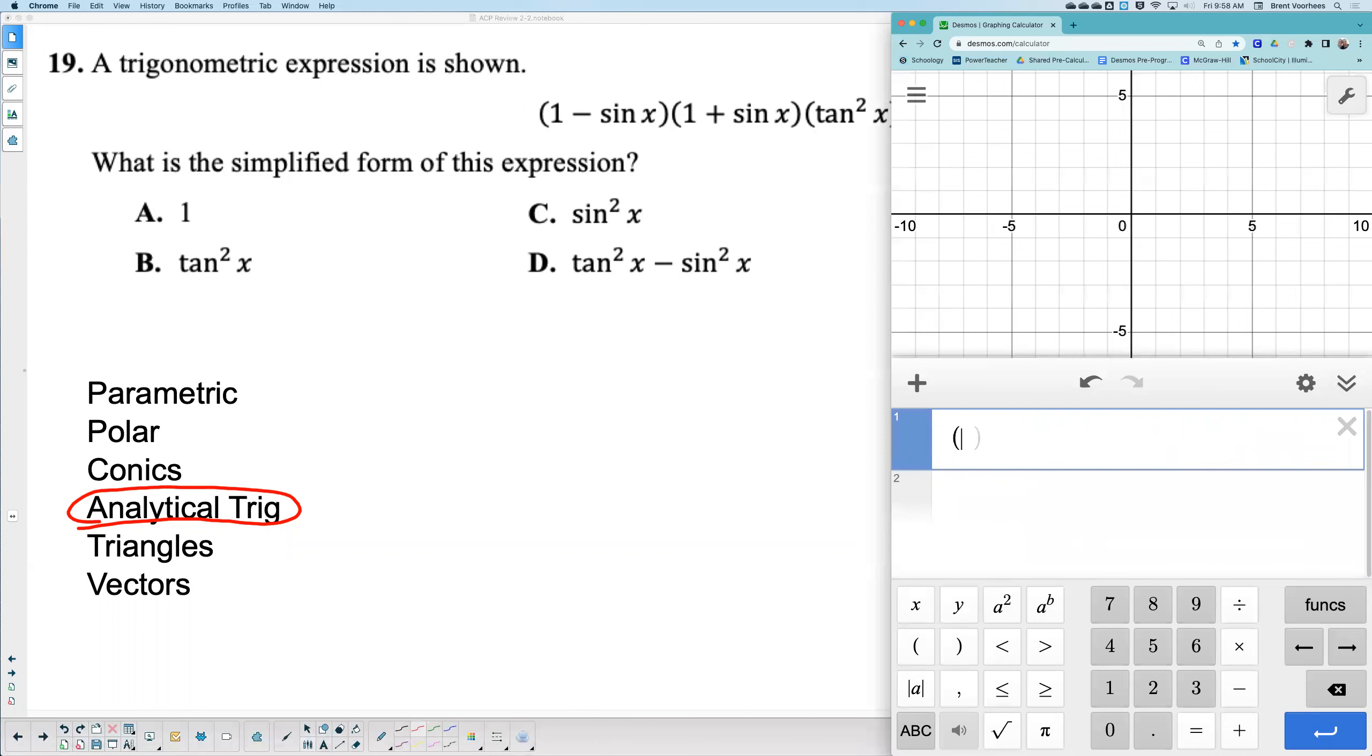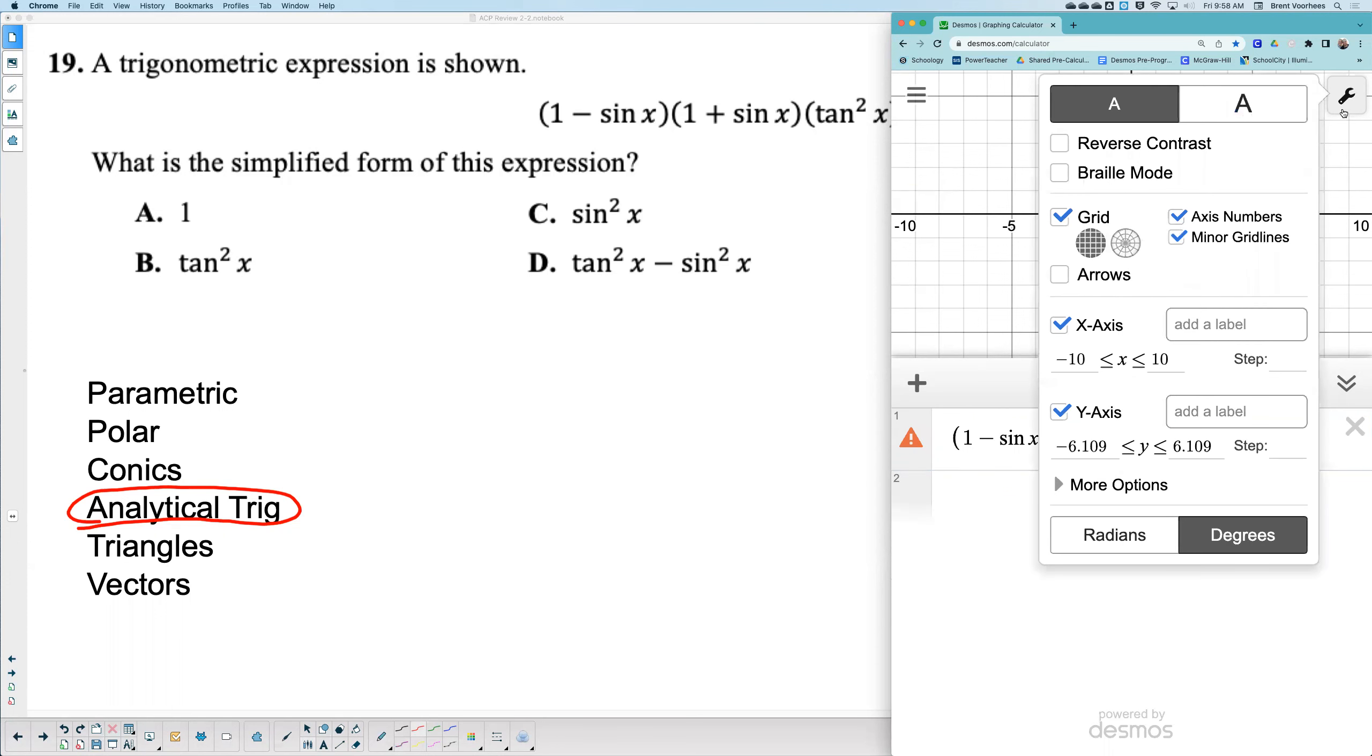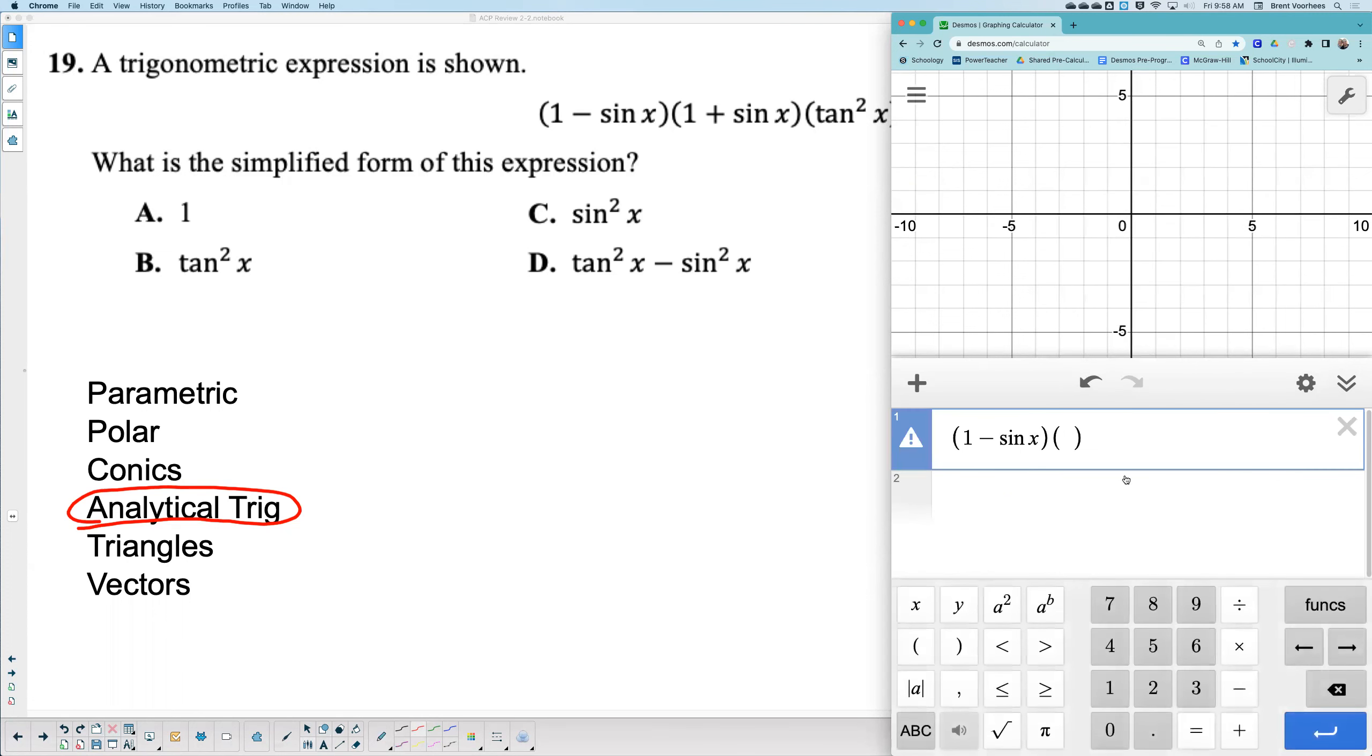The first equation they give us is one minus sine x. Oh, I need to make sure - on the test you won't have to worry about this, it'll automatically reset. I'm going to go back to radians. You always graph in radians. Always.